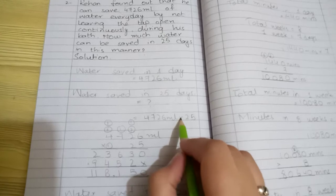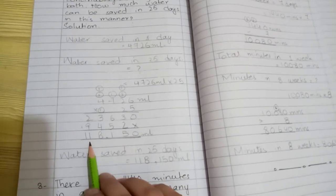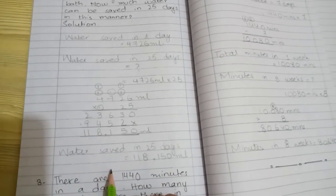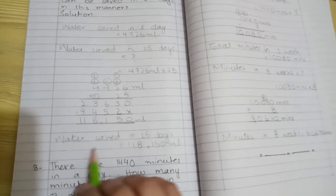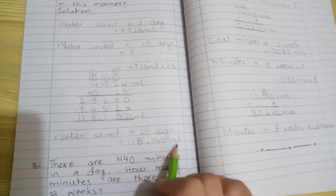So we multiply one day by 25 days. When you multiply, you get the answer: 118,150 milliliters. Water saved in 25 days equals 118,150 milliliters.